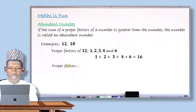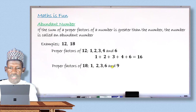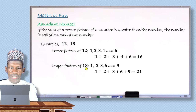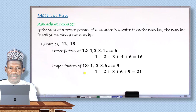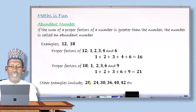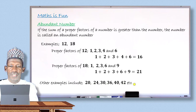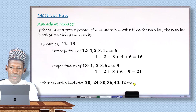So 18 is confirmed as an abundant number. Other examples of abundant numbers include 20, 24, 30, 36, 40, 42, and so on. Thank you for your attention. We will see more of these interesting things in mathematics in our subsequent lessons.